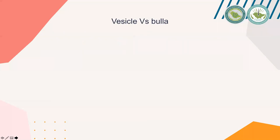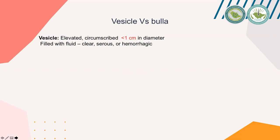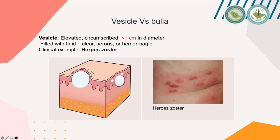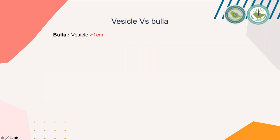Now we'll move to vesicle versus bulla. A vesicle is an elevated, circumscribed lesion less than one centimeter in diameter, filled with fluid that could be clear, serous, or hemorrhagic. A clinical example is herpes zoster — multiple tiny vesicles filled with clear fluid on an erythematous background. A bulla is like a vesicle — an elevated lesion filled with clear, serous, or hemorrhagic fluid — but larger than one centimeter in diameter. A clinical example is bullous pemphigoid, an autoimmune disease.